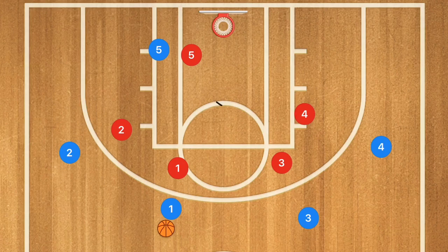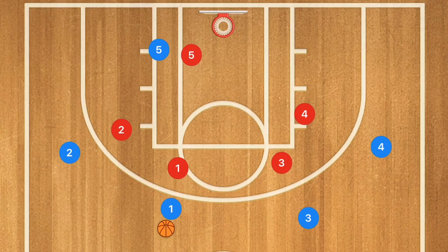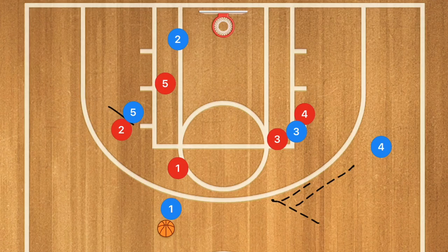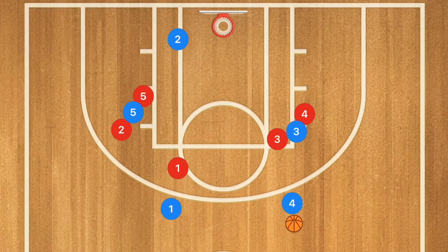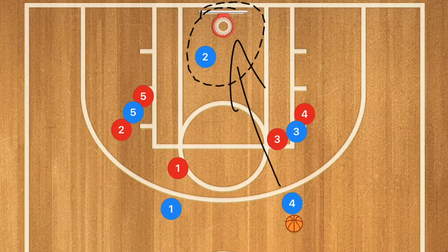We ran a triangle offense, and this is technically where you start it with an entry pass. To counteract teams that recognize the setup, you can mix it up: have player 3 set a screen down for player 4 who pops out, and player 5 screens up for player 2 who cuts towards the rim. We're hoping for player 1 passing to player 4 for a shot, or player 2 being open in the low post for the layup — a nice quick hitter to get an easy couple of points.